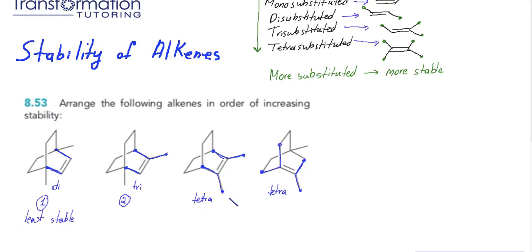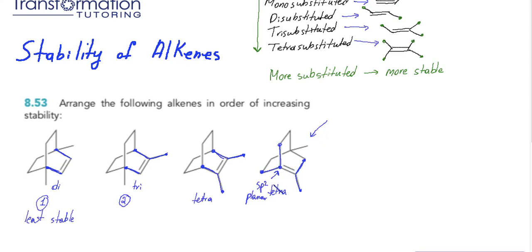Let's take a closer look. One compound has its double bond at the bridge, and this compound is actually very unstable. We don't want a double bond on the bridge because the carbon would be sp2-hybridized, connected to three attachments requiring a planar 120-degree bond angle. However, the bridged compound cannot be planar, so there is a lot of strain on this compound making it very unstable.